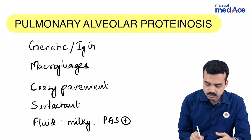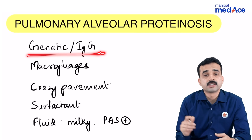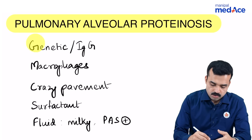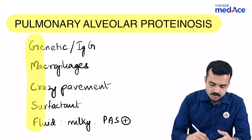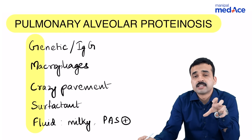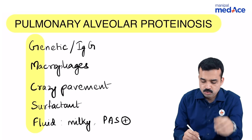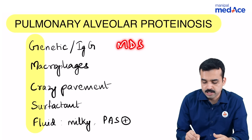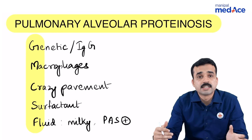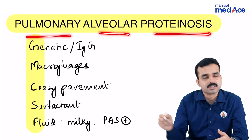All of this is actually occurring because of GM-CSF going wrong. GM-CSF is responsible for the breakdown of surfactant, and here there is either a mutation or an autoimmune process. Sometimes there is an acquired disease — myelodysplastic syndrome or exposure to talc or silica can lead to reduced GM-CSF levels, which leads to increased levels of surfactant, causing pulmonary alveolar proteinosis.